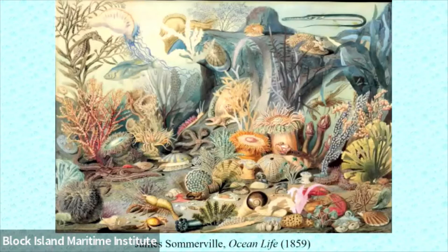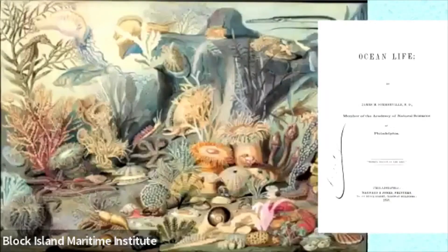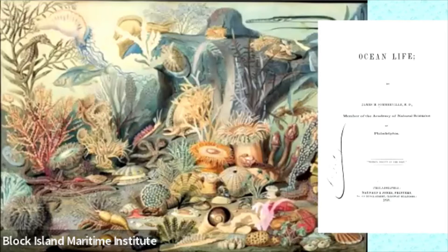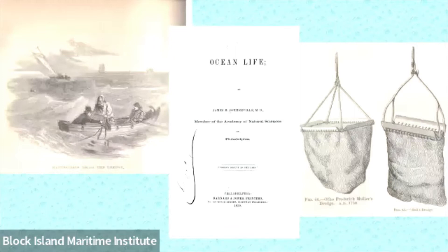Somerville helped create this painting; two other artists helped him, one of whom was the first professor of drawing and painting of the Pennsylvania Academy of the Fine Arts. This image depicts a colorful underwater scene crowded with many species — not in a way you would actually see them. It was made for lithographic reproduction in a pamphlet that Somerville authored called Ocean Life, published in 1859 — three years before Moran's painting. The lithograph illustrates in color the species described in the pamphlet. This really is scientific illustration of marine animals.